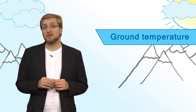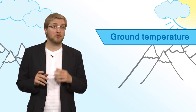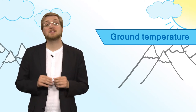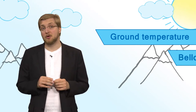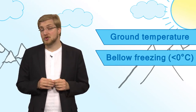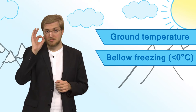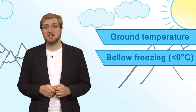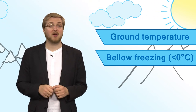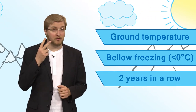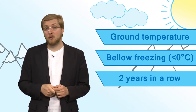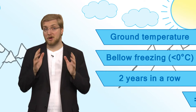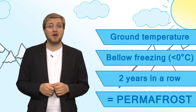Permafrost is a phenomenon described as follows. When the temperature of the ground — be it rocks or soil — is consistently below the freezing point of water, which is 0 degrees Celsius, for at least two years in a row, we call that ground permafrost.